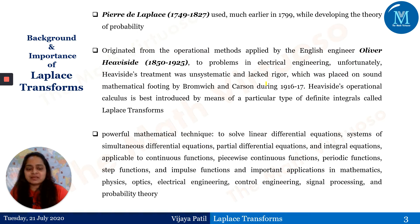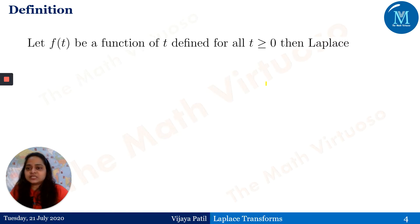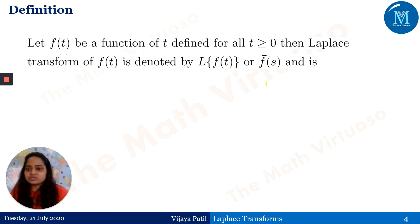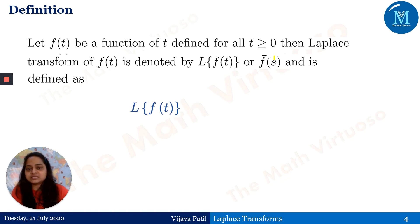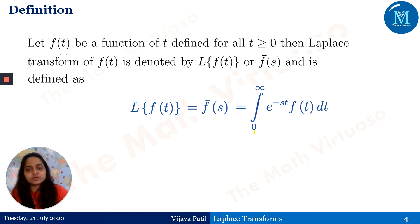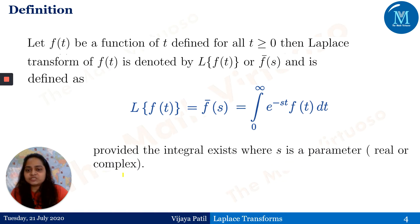The definition: let f(t) be a function of t defined for all t ≥ 0. The Laplace transform of f(t) is defined as L{f(t)} = f̄(s) = ∫₀^∞ e^(−st) f(t) dt, provided the integral exists, where s is a parameter — real or complex.